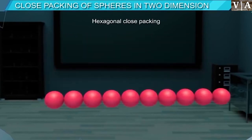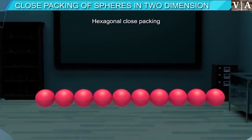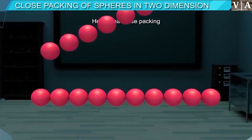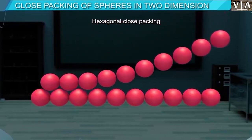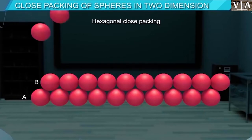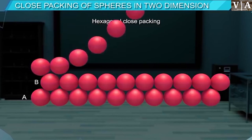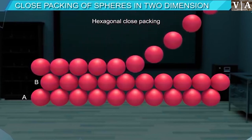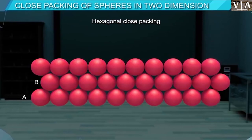In hexagonal close packing, the second row of spheres is placed in a staggered manner such that the spheres fit into the depressions of the first row. The first row is called A type, and since the second row differs from the first, it is called B type. If a third row is placed above the second row in the same manner, the third row spheres are aligned with those of the first layer, and each sphere is in contact with six other spheres, so the coordination number is 6.